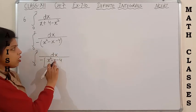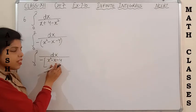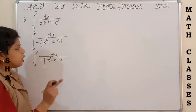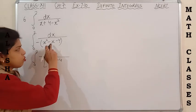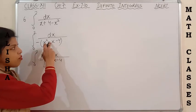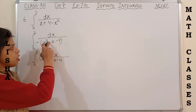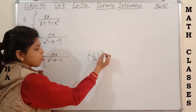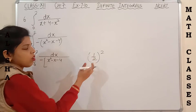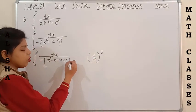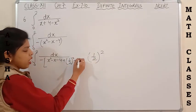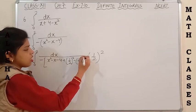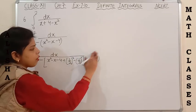To make it a complete square, we have to add and subtract half the coefficient of x, whole squared. The coefficient of x here is minus one, so minus one half squared means (1/2)². I have to add (1/2)² and subtract (1/2)² just to make it in the form of a complete square.